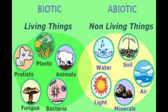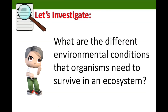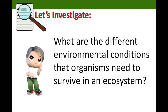All organisms have needs, such as food, water, and air. If the needs of the organism in the ecosystem are not met, they cannot survive, and this will affect the life cycle of an organism. Organisms only survive in an ecosystem when their specific needs are met. So, what are the different environmental conditions that organisms need to survive in an ecosystem?